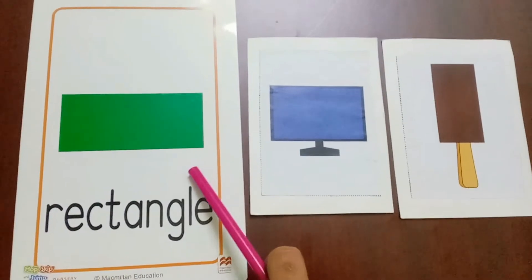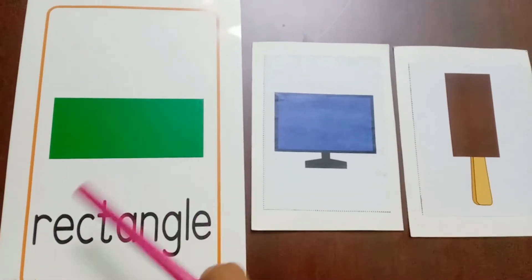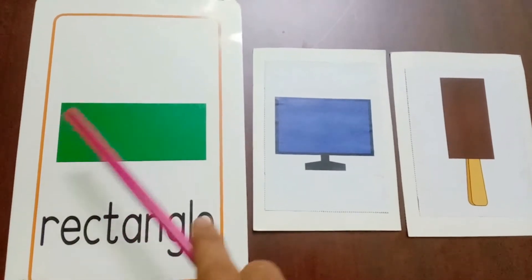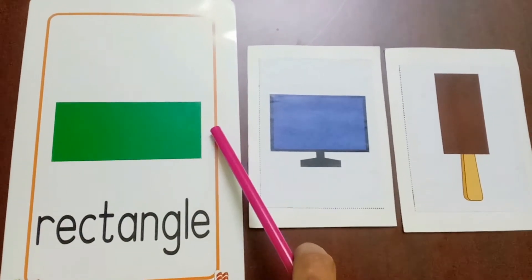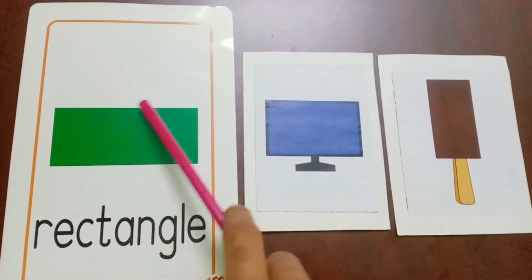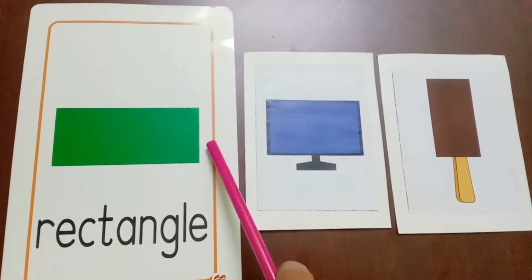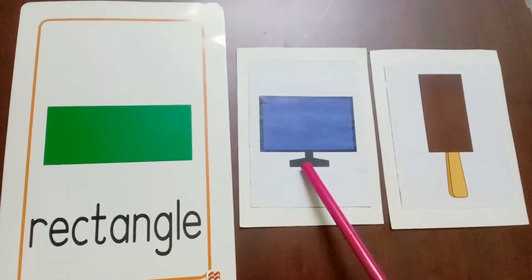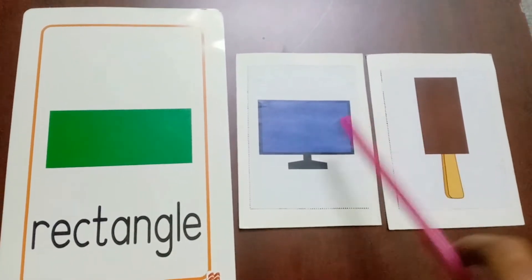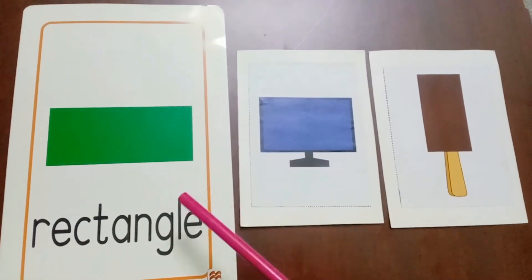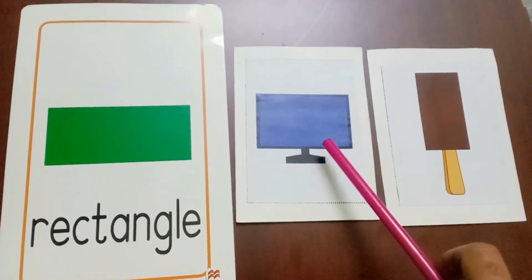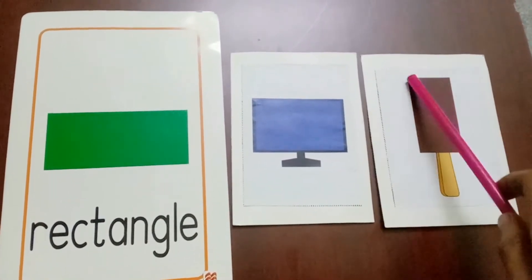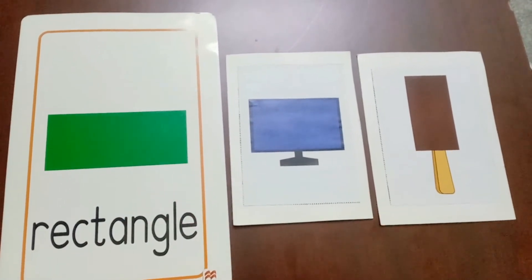This is a rectangle. A rectangle has four sides — one, two, three, four — but opposite sides are equal. So this is a rectangle. Here we have a TV and an ice cream which are of rectangle shape, as opposite sides are equal for the ice cream and TV.